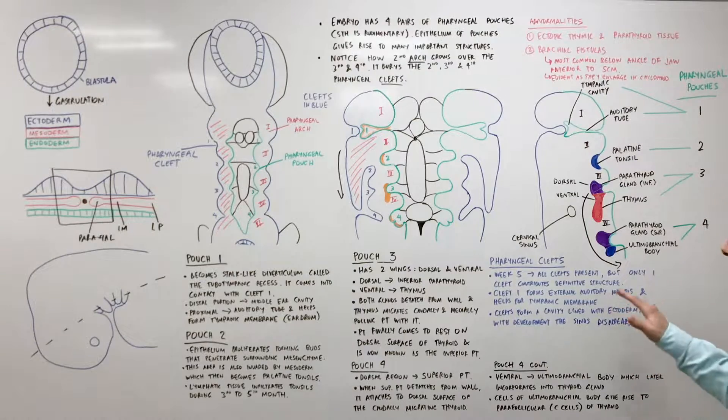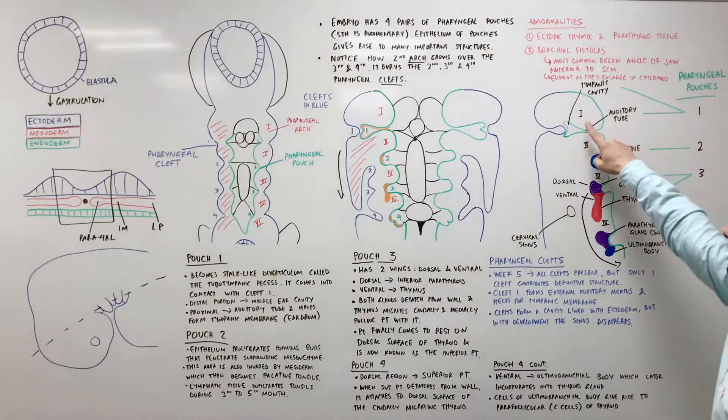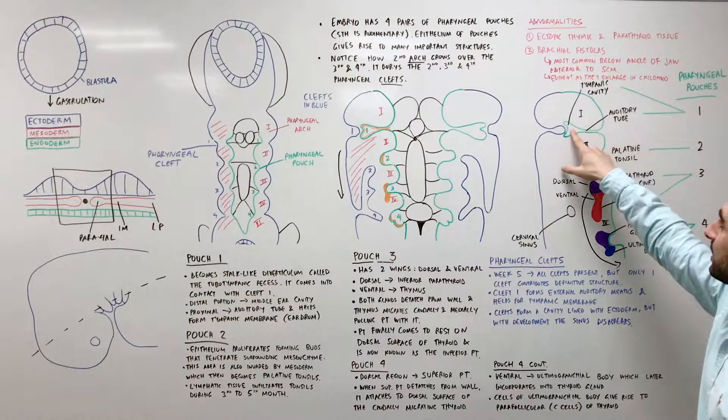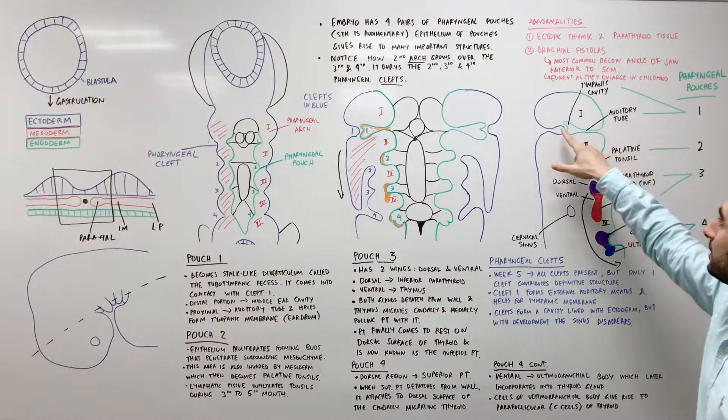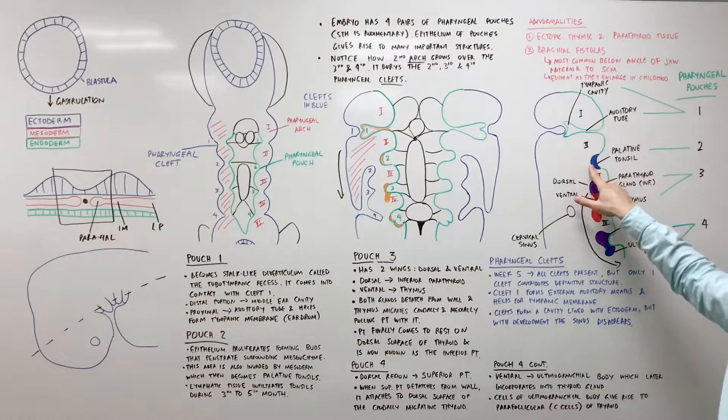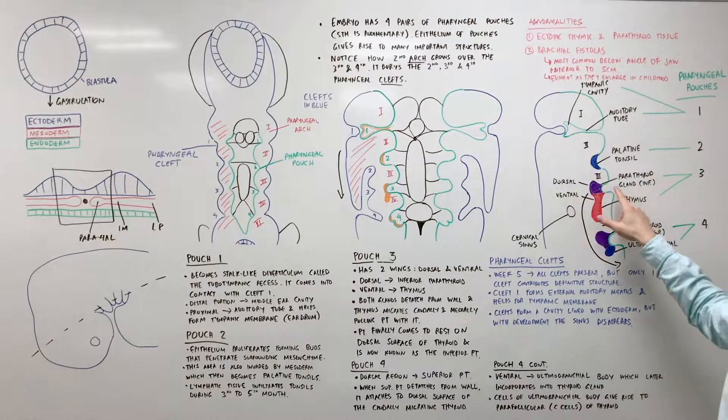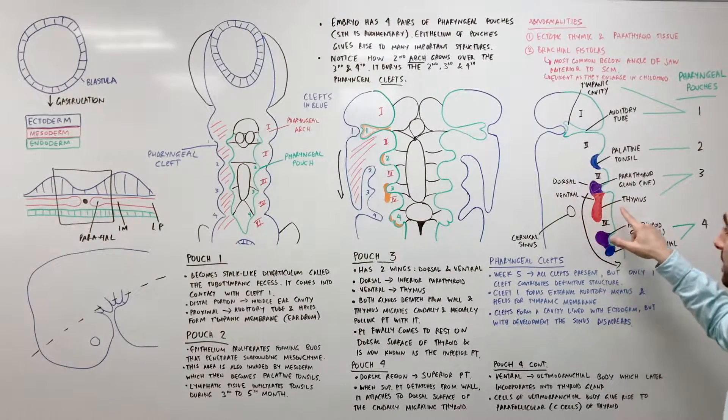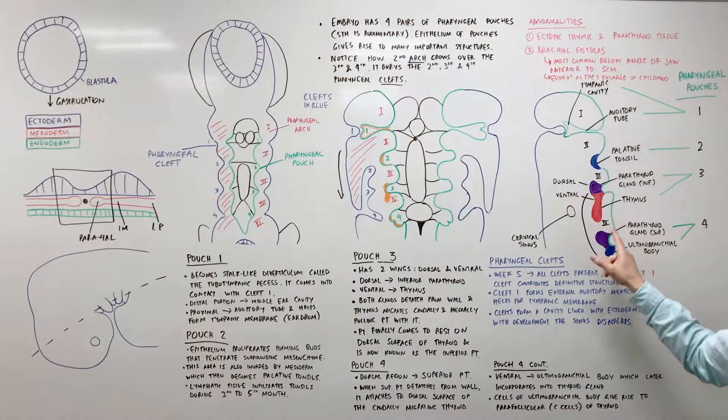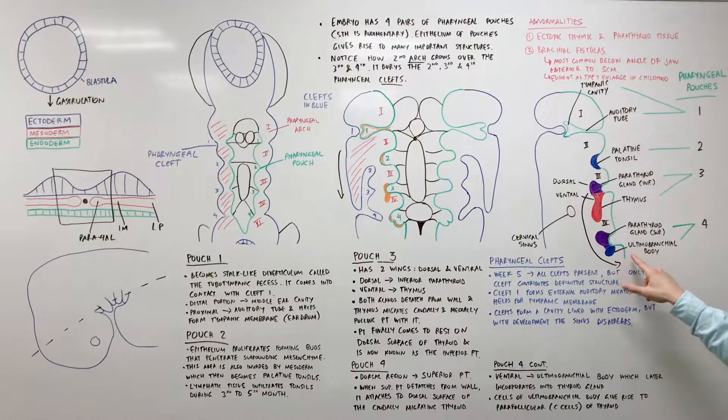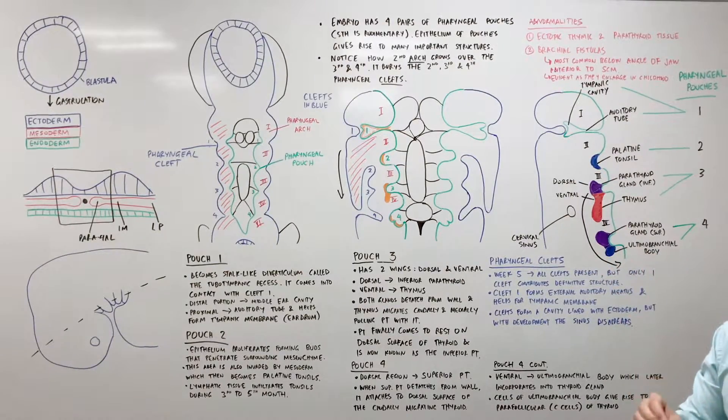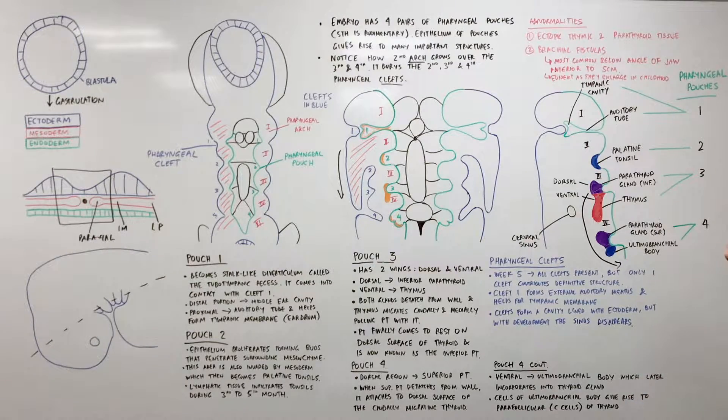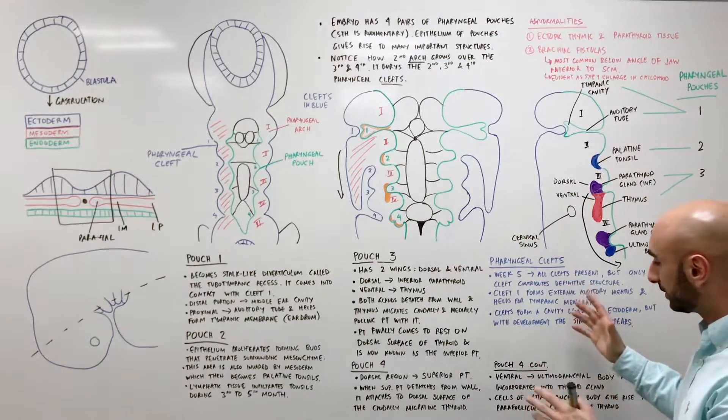Quick summary. Pouch 1, tympanic cavity, auditory tube, tympanic membrane. Pouch 2, palatine tonsil. Pouch 3, inferior parathyroid gland and thymus. Pouch 4, superior parathyroid glands and para-follicular cells of the thyroid. That's it. That's all you need to know with the pouches.